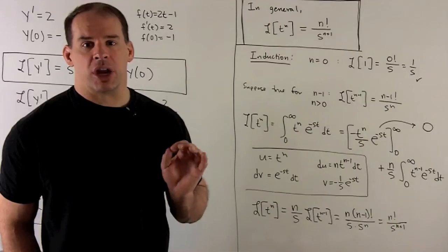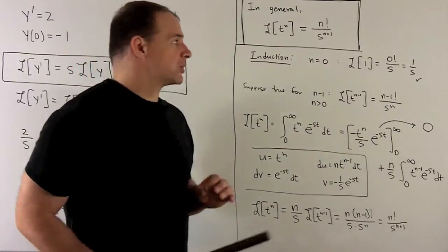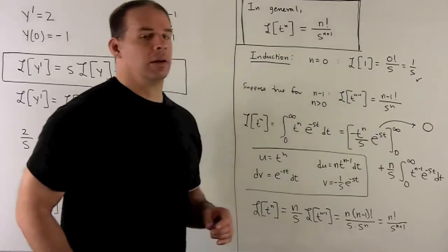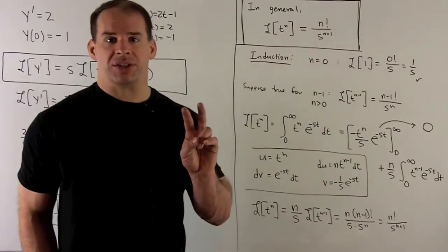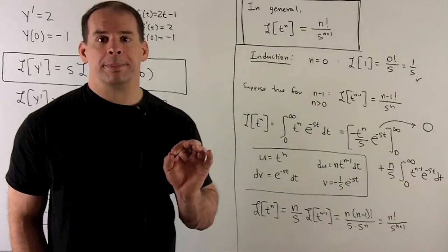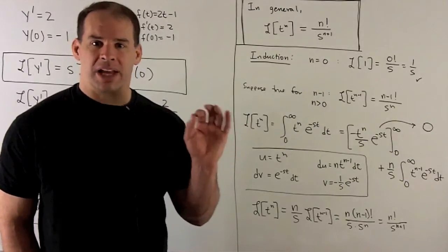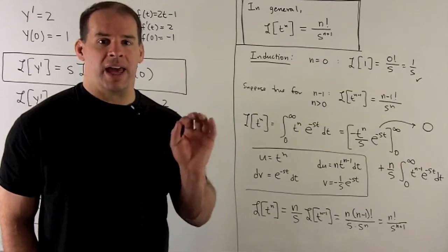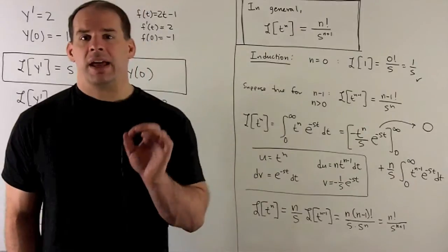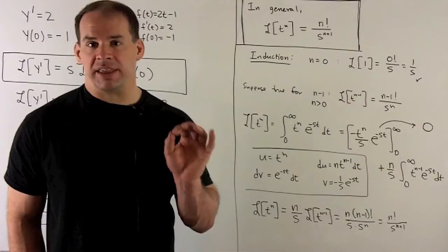Now let's look at the general formula for the Laplace transform of t to the n. The general formula is n factorial over s to the n plus 1. We've already seen two cases: when n equals 0, we take the Laplace transform of 1, and 0 factorial over s gives 1 over s, which checks out. When n equals 1, the Laplace transform of t is 1 factorial over s squared equals 1 over s squared, which we've already verified.